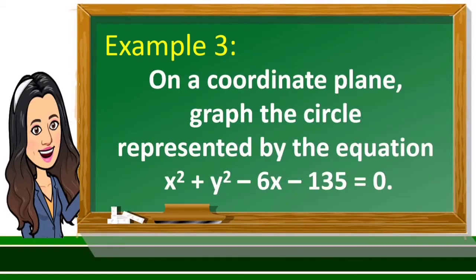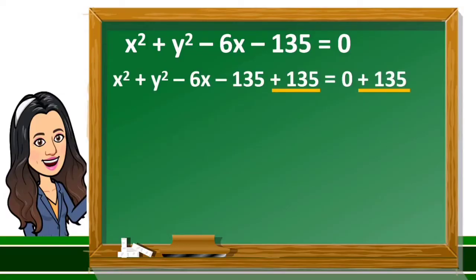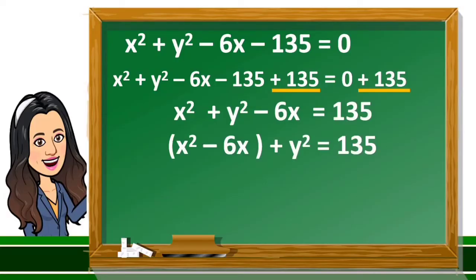Let us have another example. On a coordinate plane, graph the circle represented by the equation x squared plus y squared minus 6x minus 135 is equal to 0. The given equation is written in general form. Here are the steps: first, add 135 to both sides of the equation, then simplify.